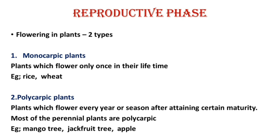Polycarpic plants flower multiple times in their lifetime. Most of the perennial plants are polycarpic. For example, mango tree, jackfruit, and apple are in the polycarpic category.